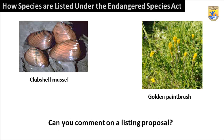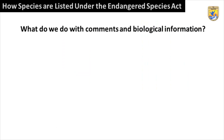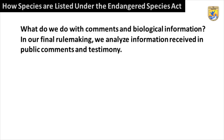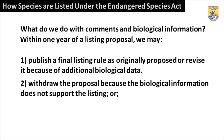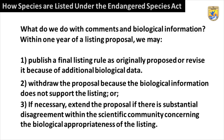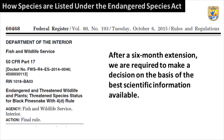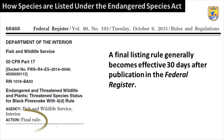Can you comment on a listing proposal? Yes. In our final rulemaking, we analyze information received in public comments and testimony. Within one year of a listing proposal, we may publish a listing rule as originally proposed, or revise it to include additional biological data, withdraw the proposal because the biological information does not support the listing, or extend the proposal if there is substantial disagreement within the scientific community concerning the biological appropriateness of the listing. After a six-month extension, we are required to make a decision on the basis of the best scientific information available. A final listing rule generally becomes effective 30 days after publication in the Federal Register.